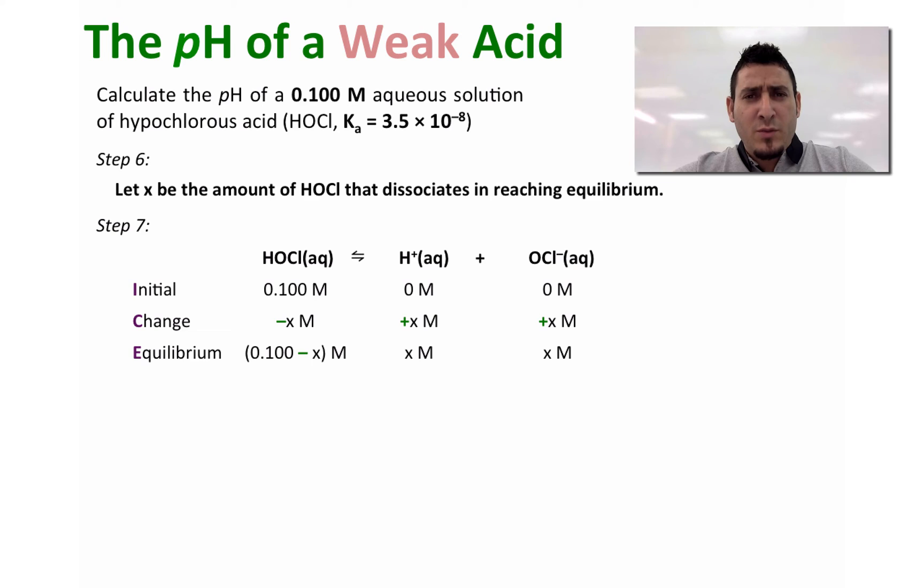Step 8: We will replace the equilibrium concentrations by their values. Therefore, we get Ka equals x multiplied by x divided by 0.100 - x.